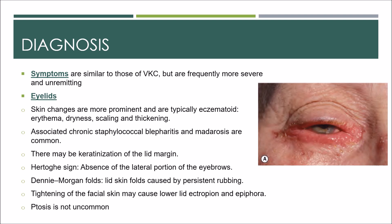Symptoms are similar to those of VKC but are frequently more severe and unlimited. Starting with the eyelids, skin changes are more prominent and are typically eczematous: erythema, dryness, scaling, and thickening, sometimes with disruption to epidermal integrity such as fissuring and excoriation due to intense itching. Associated chronic staphylococcal blepharitis and madarosis are also common, and there may be keratinization of the lid margin. Hertoghe's sign is the absence of the lateral portion of the eyebrows.